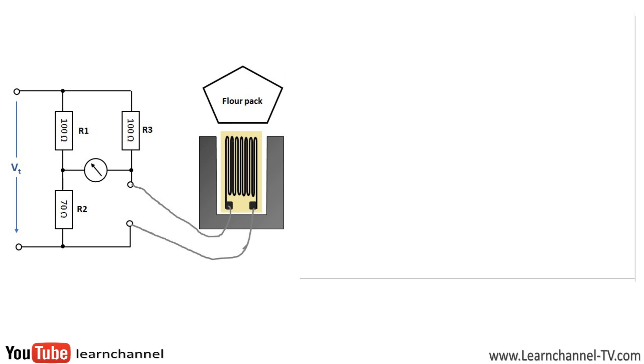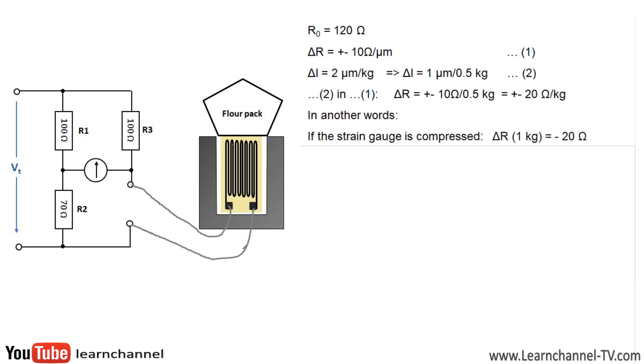Finally, an application example without complicated mathematics. Flower packages must be checked for their mass in a final inspection. The strain gauge used here has a standard resistance of 120 ohms. This changes by 10 ohms with a change in length of 1 micrometer. When the bridge circuit is calibrated, the flower package has its correct filling weight.